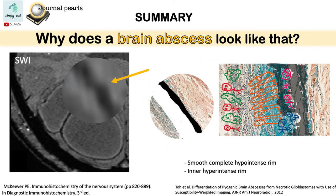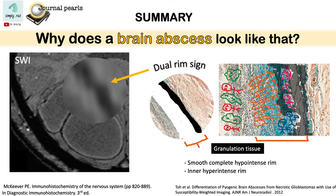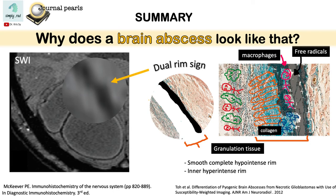In summary, a pyogenic brain abscess has a characteristic dual rim sign on SWI because of the granulation tissue. This granulation tissue contains collagen and other cells, among which are macrophages, which create byproducts called free radicals, producing the smooth hypo-intense outer rim. Recognizing this dual rim sign is helpful to differentiate a pyogenic abscess from a necrotic glioblastoma.